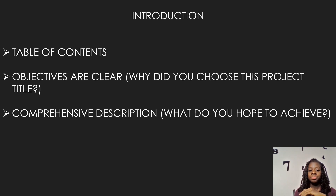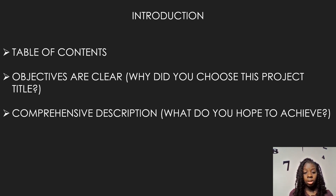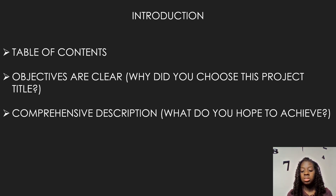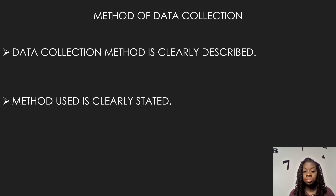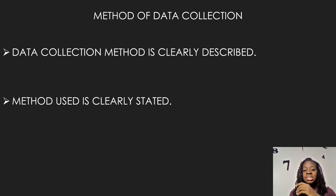For your introduction, it includes your table of contents — that's one mark. Your objectives should be clear: why did you choose this topic and title? It has to be comprehensive — what do you hope to achieve? To get all four marks, you need all of these. For your method of data collection, you have to state it clearly. If you're doing an experiment, explicitly say 'I am doing an experiment' and describe what will be done.